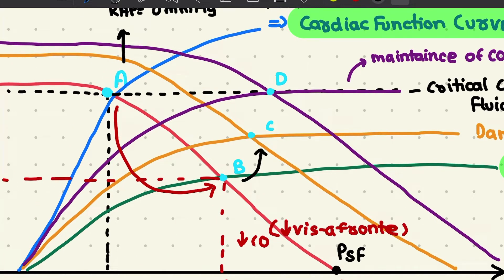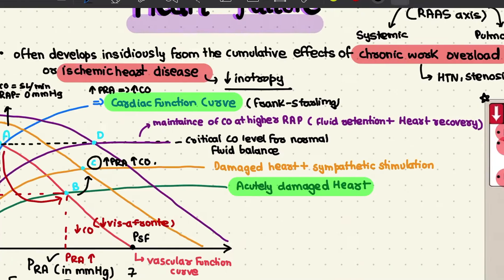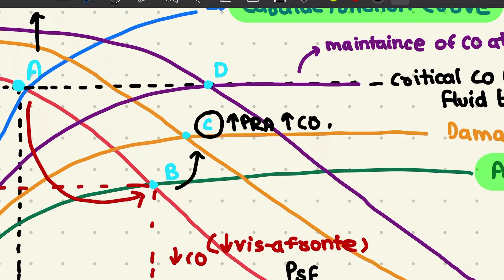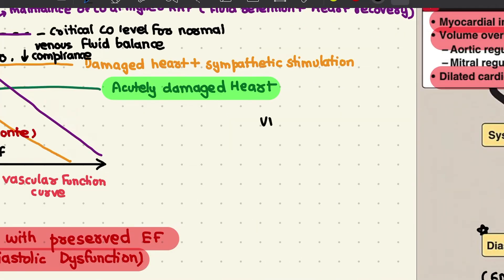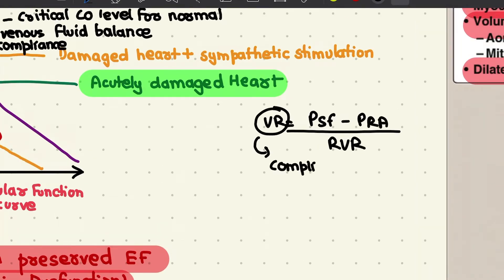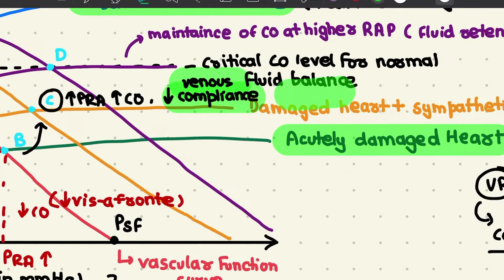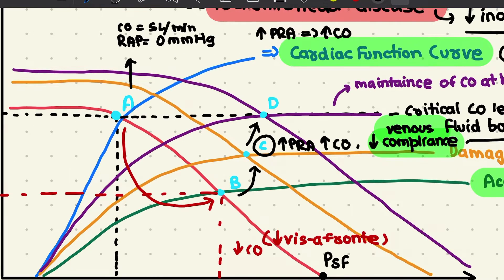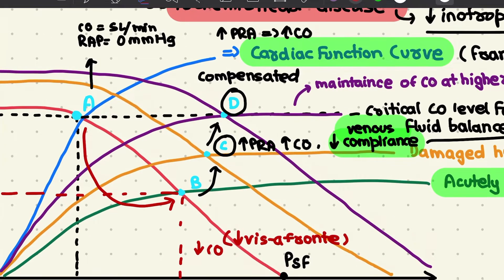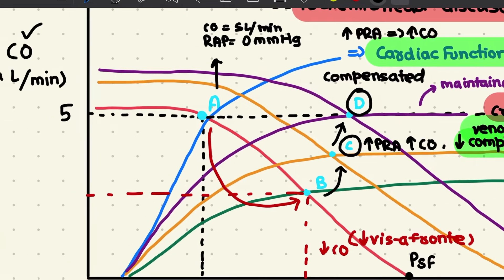The cardiac function curve represents the Frank-Starling mechanism — with increased right atrial pressure, cardiac output increases. When acutely damaged, the heart first increases sympathetic stimulation and heart rate, reaching a new equilibrium at point C where right atrial pressure and cardiac output both increase. Sympathetic stimulation decreases venous compliance, increasing venous system pressure, facilitating increased filling pressures. Venous return depends on mean systemic pressure minus right atrial pressure divided by resistance to venous return.